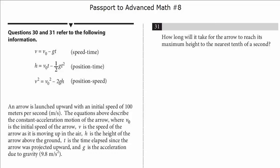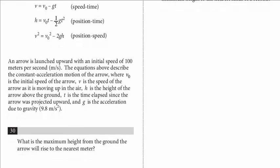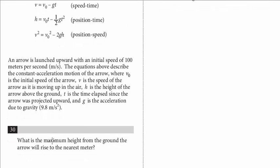So let's take a look at the first question. What is the maximum height from the ground the arrow will rise to the nearest meter? And so we're solving for height and we're given that that's h. And you have to decide which equation to use. The key to this problem, both of these questions, these are really what I call physics type questions where you have to glean some information to help you solve it.